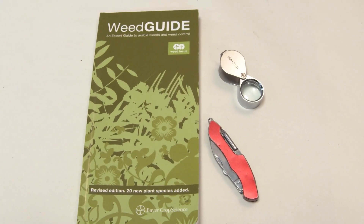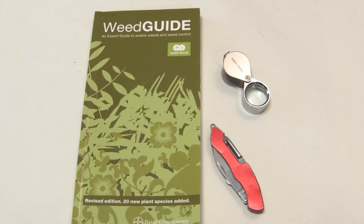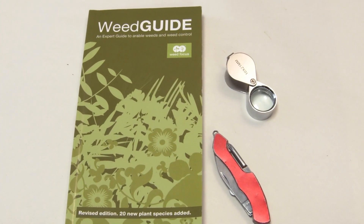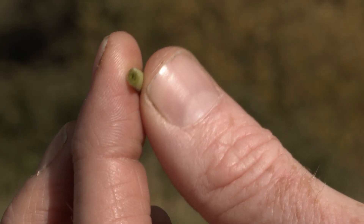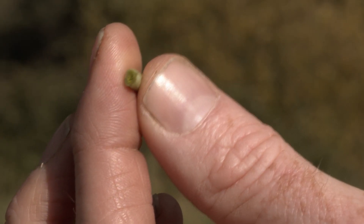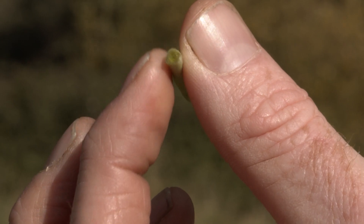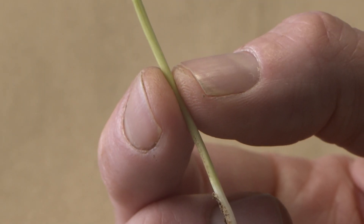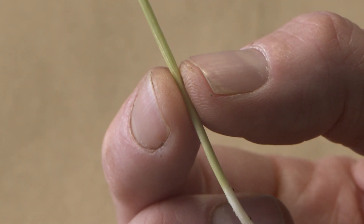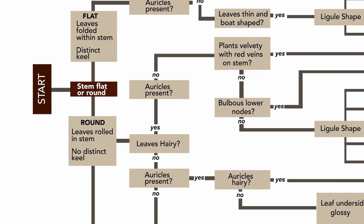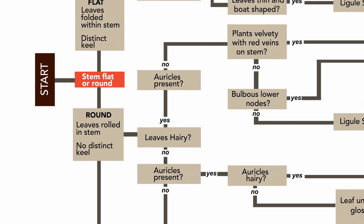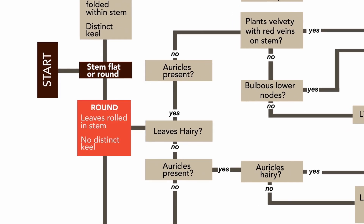So using the weed guide, the first thing you want to see is whether the leaves are rolled or folded within the stem. You will be rolling the stem between your fingers and you'll see that with canary grass the leaves will actually be rolled.